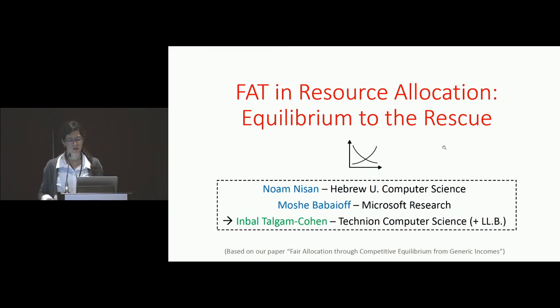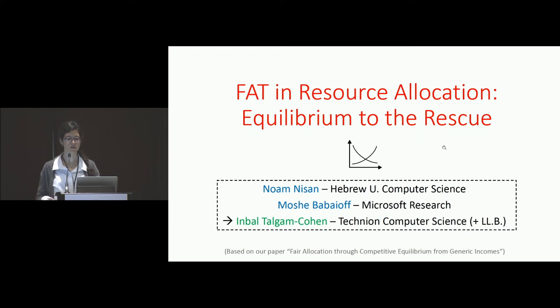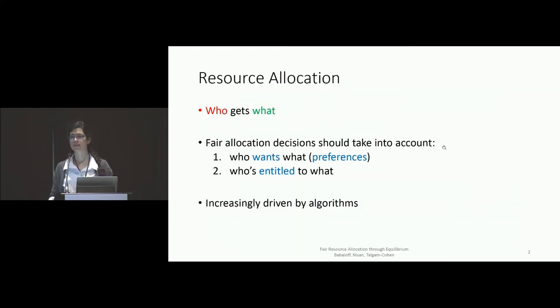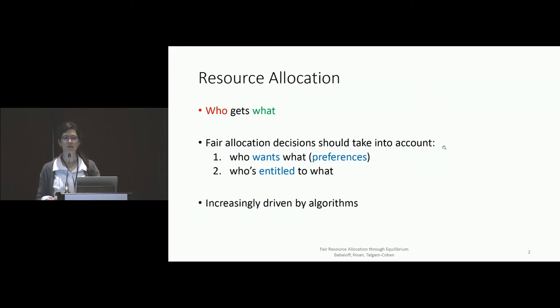Our next speaker is Inbal Taugman Cohen. Hi, I'm Inbal. I'm a computer scientist with a legal background. I want to tell you today about how economic equilibrium can help us when we're trying to achieve fairness and transparency in resource allocation. A resource allocation decision determines who gets what. If we want it to be fair, we want to take into account both who wants what — the preferences of the people over the resources — and second, who is entitled to what. These decisions on resource allocation are increasingly made by algorithmic systems such as large electronic marketplaces, credit scoring, and ranking.